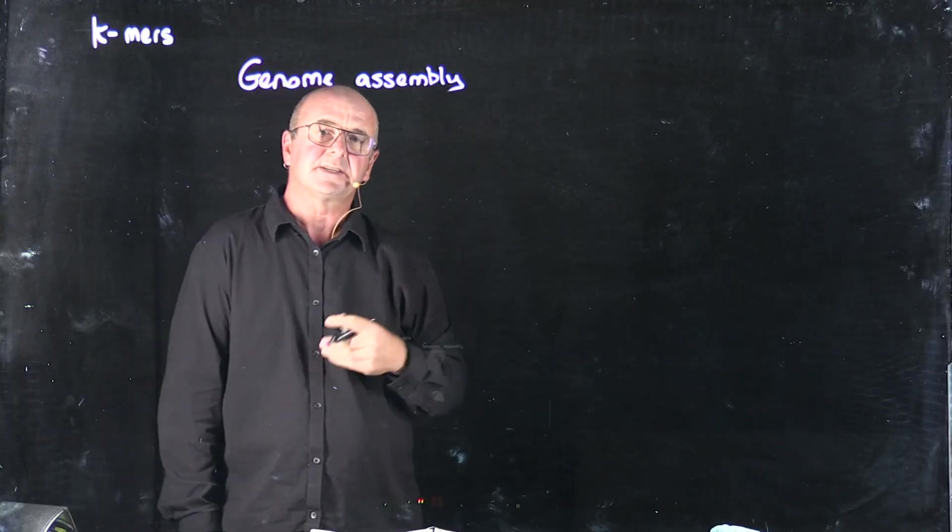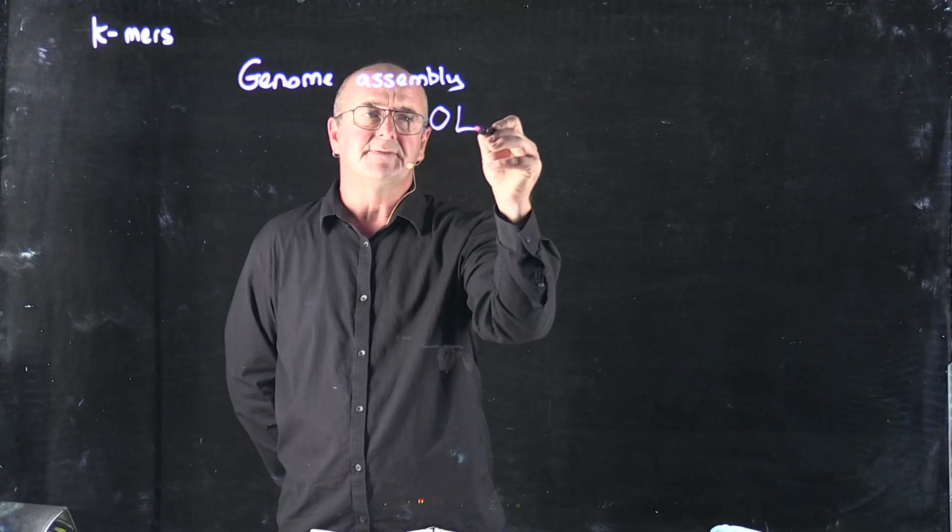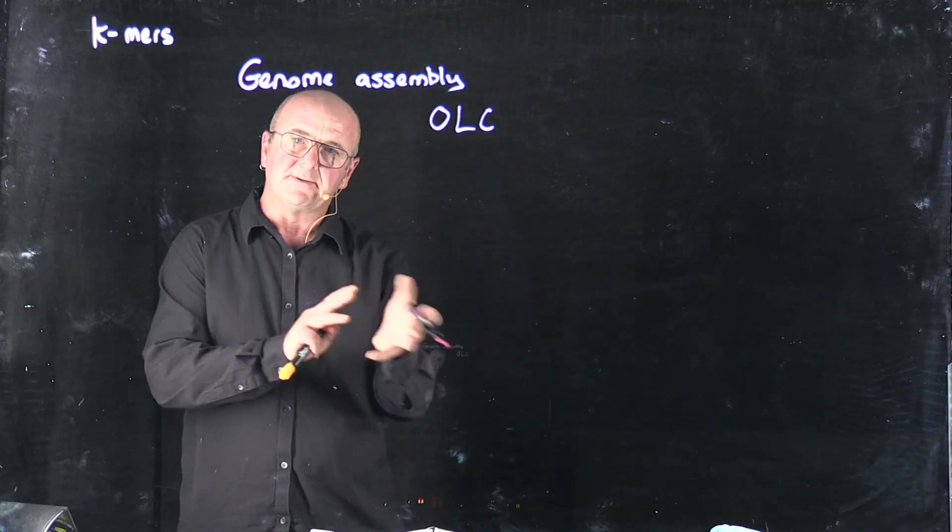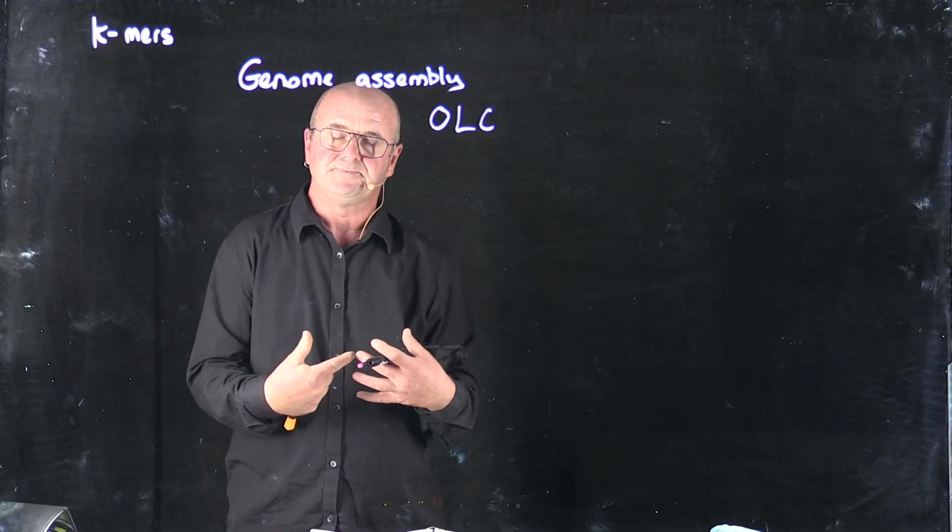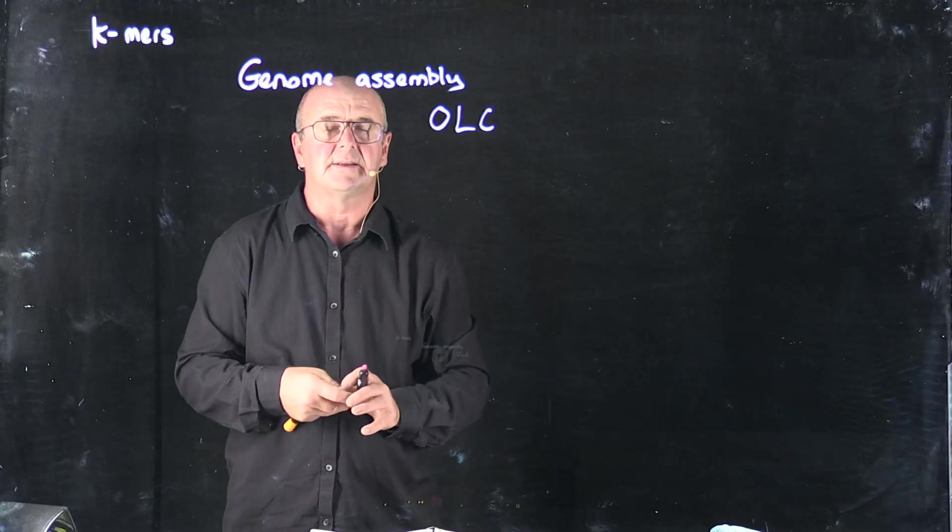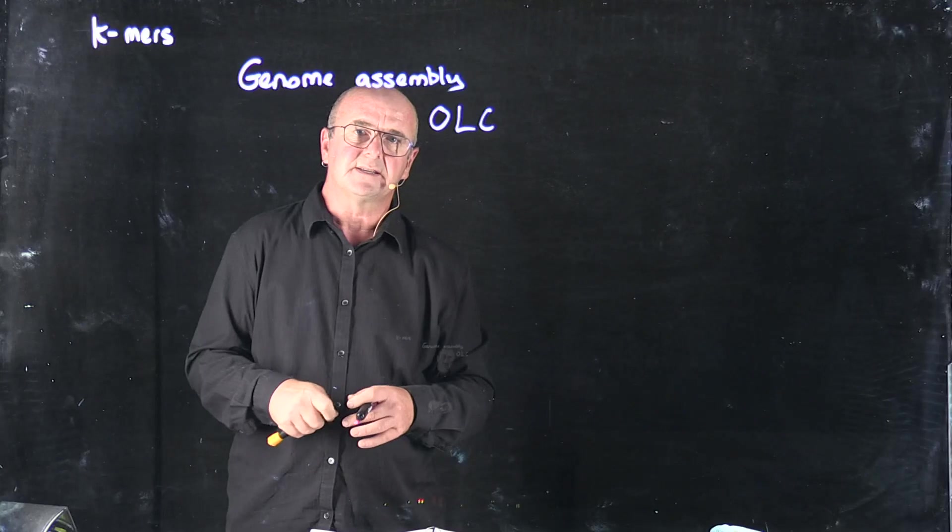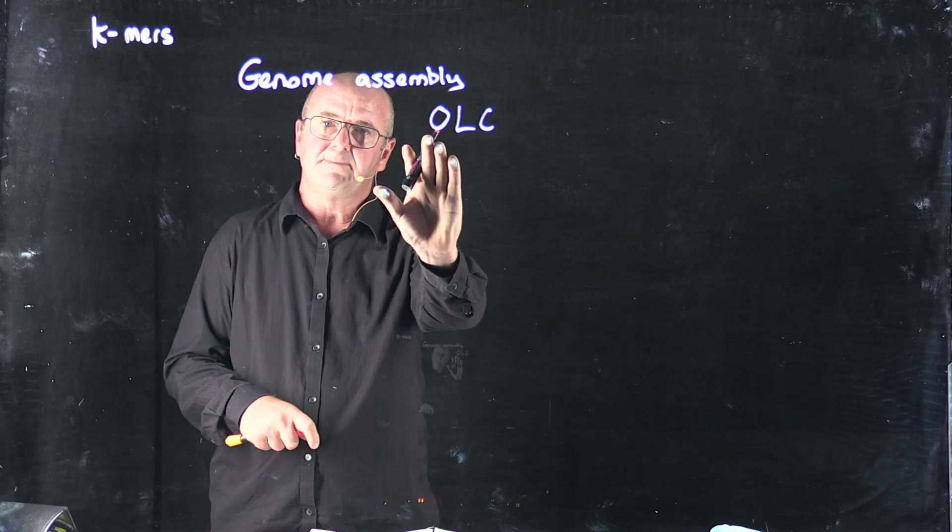One way is what's called overlap layout consensus, where you figure out the overlap between all of the reads, you lay them out into an order, and then you build a consensus. This is a really slow technique that doesn't scale well to many millions or billions of reads, but one of the ways you can make it scale a bit faster is by building the overlap based on K-mer counts.